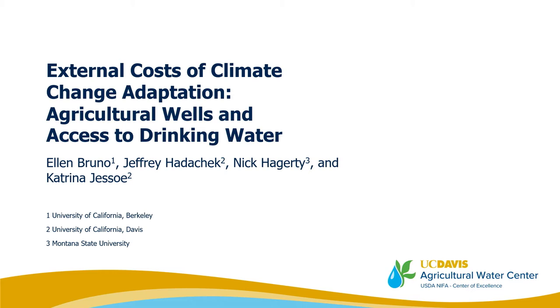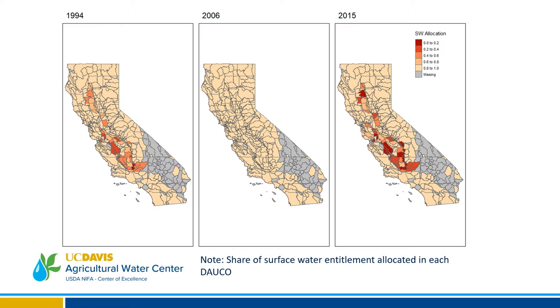Hello, everyone. As Ellen mentioned, my name is Jeff Hadacek and I'm a PhD student here at Davis. This project is co-authored with Ellen and Nick Haggerty, who is at Montana State, and Katrina Gesso, who is also here at Davis. I'm going to motivate this by talking about surface water. Drought in California manifests itself through surface water reductions throughout the growing season — through the state's network of surface water canals, the State Water Project, the Central Valley Project, or the Lower Colorado River Project. In years of drought like 1994 and 2015, areas in the Central Valley receive only a percentage of their allocation rather than the full amount of their entitlement, whereas in wetter years like 2006, everybody receives their full entitlement of surface water.